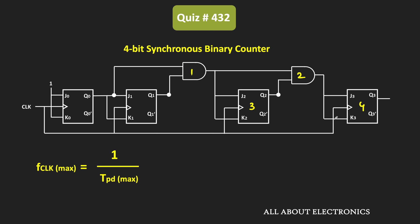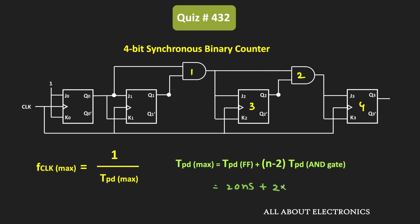This maximum propagation delay will decide the maximum operating clock frequency for the synchronous counter. In general, for an N-bit synchronous binary counter, the maximum propagation delay is the propagation delay of the flip-flop plus (n minus 2) times the propagation delay of the AND gate. For this 4-bit synchronous binary counter, the maximum propagation delay equals 20 ns plus 2 times 5 ns, giving an overall propagation delay of 30 ns. Therefore, the maximum operating clock frequency is 1 divided by 30 ns, which equals 33.3 MHz.